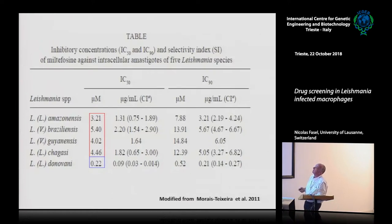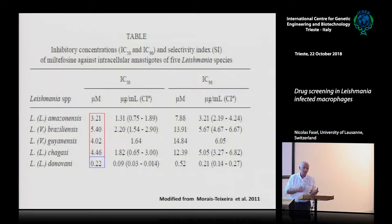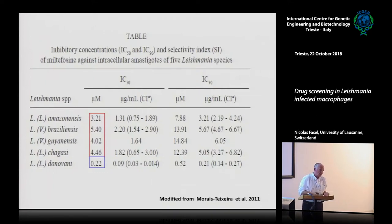For example, the IC50 for miltefosine is similar for L. amazonensis, L. braziliensis, and L. guyanensis, but very different for L. donovani. This was done against intracellular amastigotes, and you can see the IC90 is also different. Depending on your drug, you can have IC50 values that differ, and what you are looking for is a lower IC50 — to inject as little drug as possible.